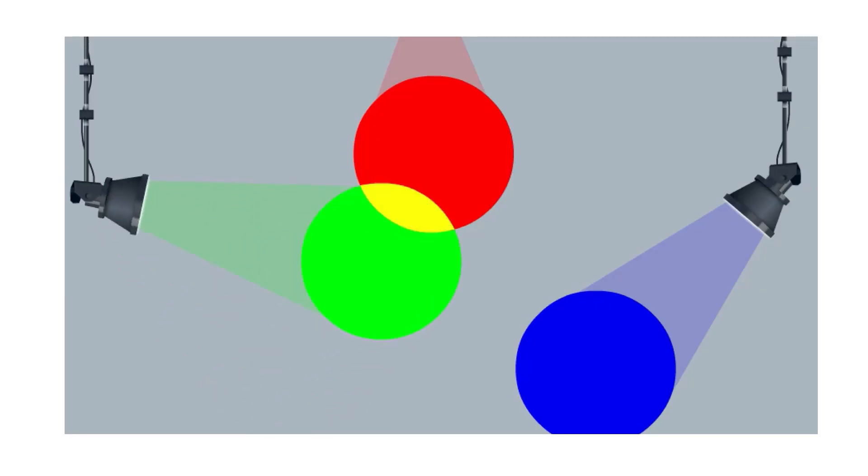When red and green light are mixed together, yellow light is produced. Apabila cahaya merah dan hijau dicampurkan, cahaya kuning akan dihasilkan.